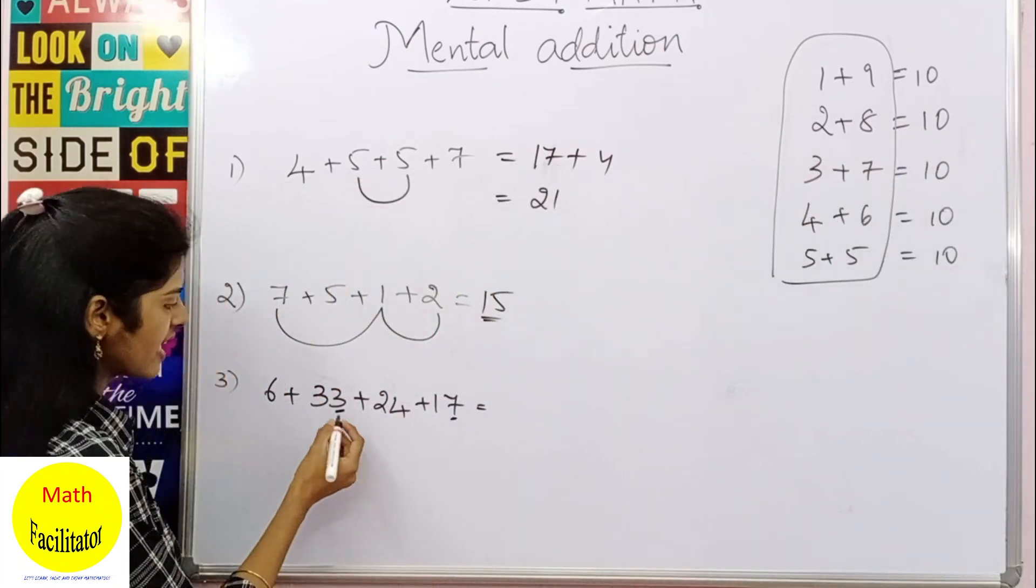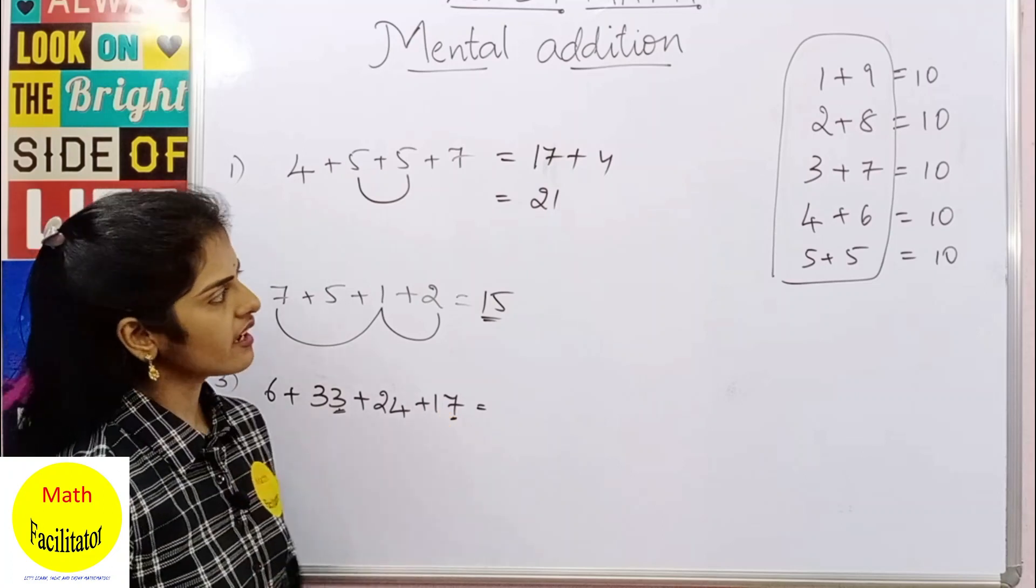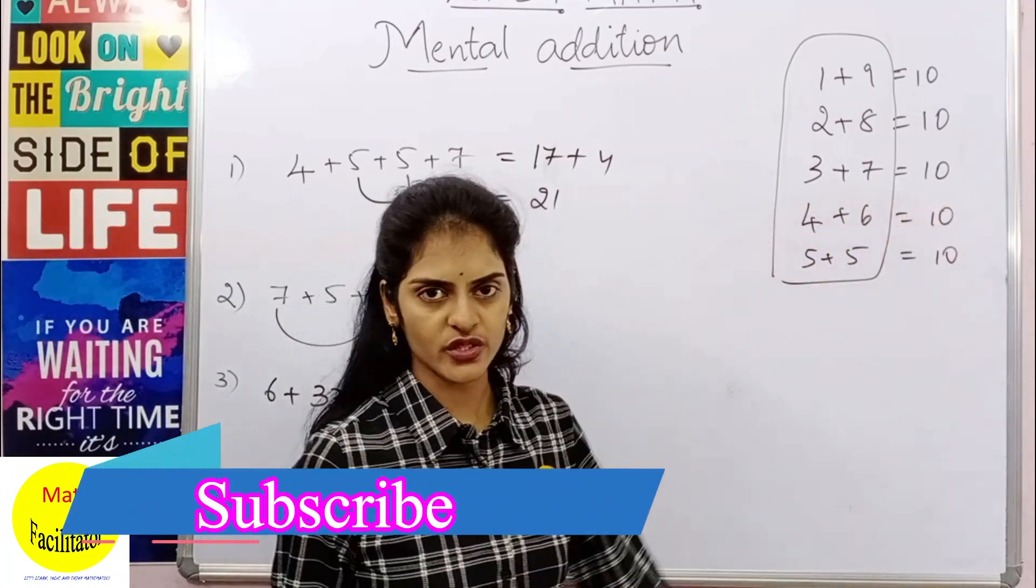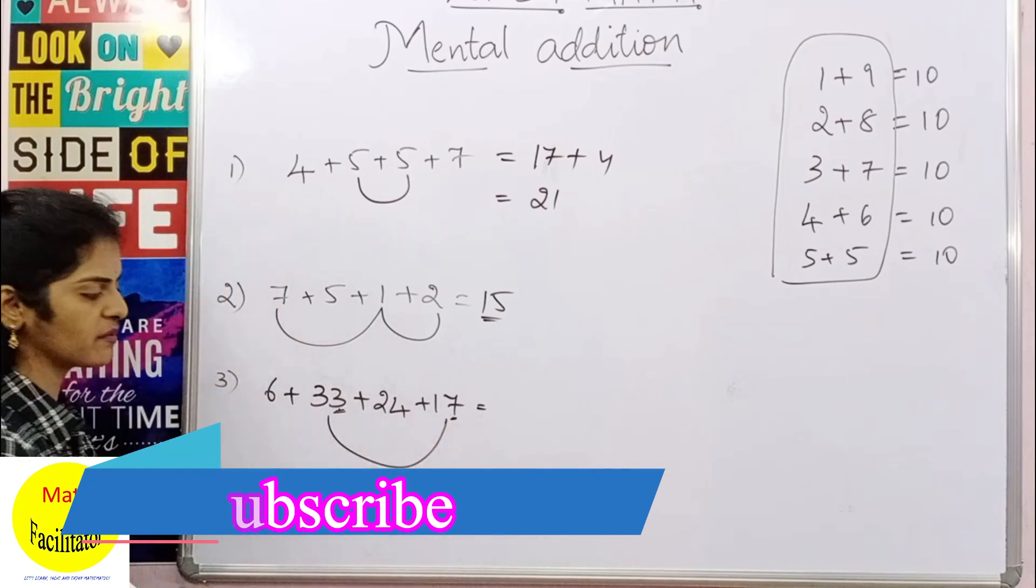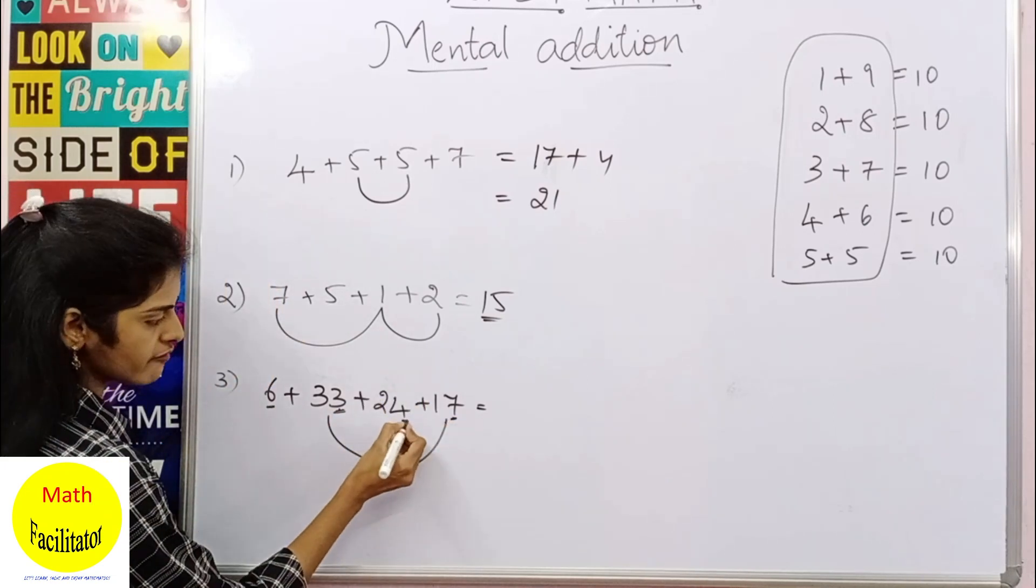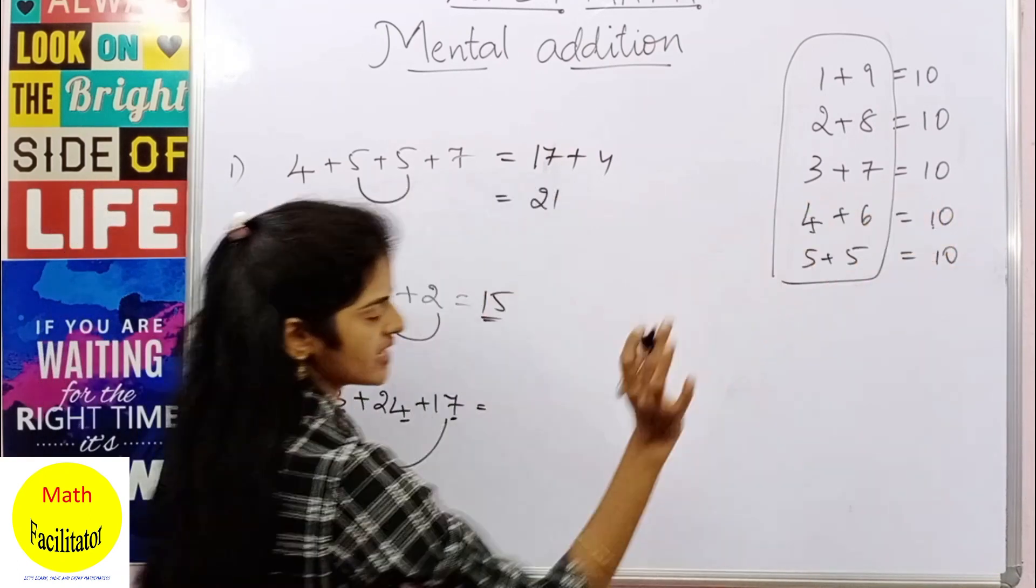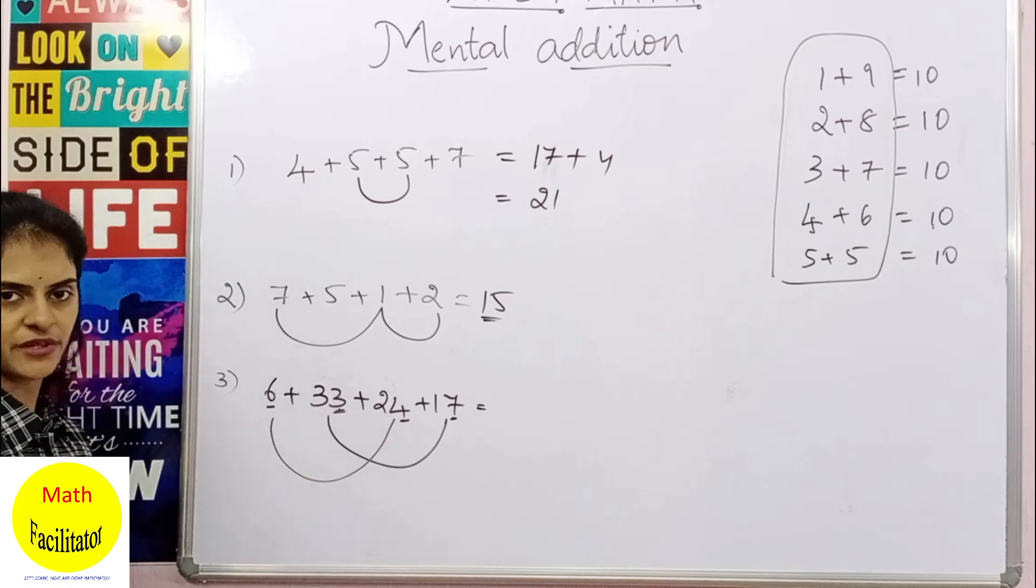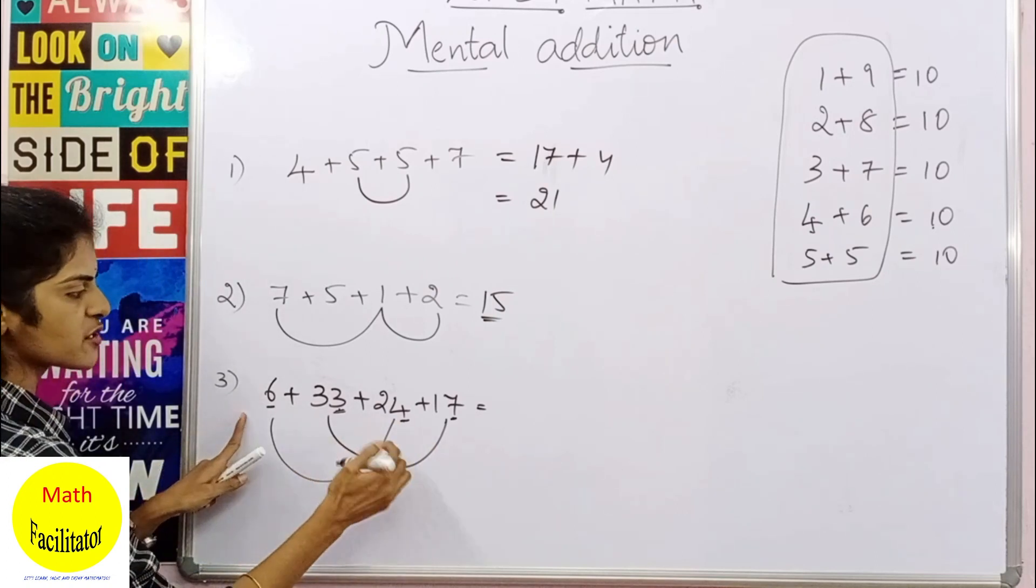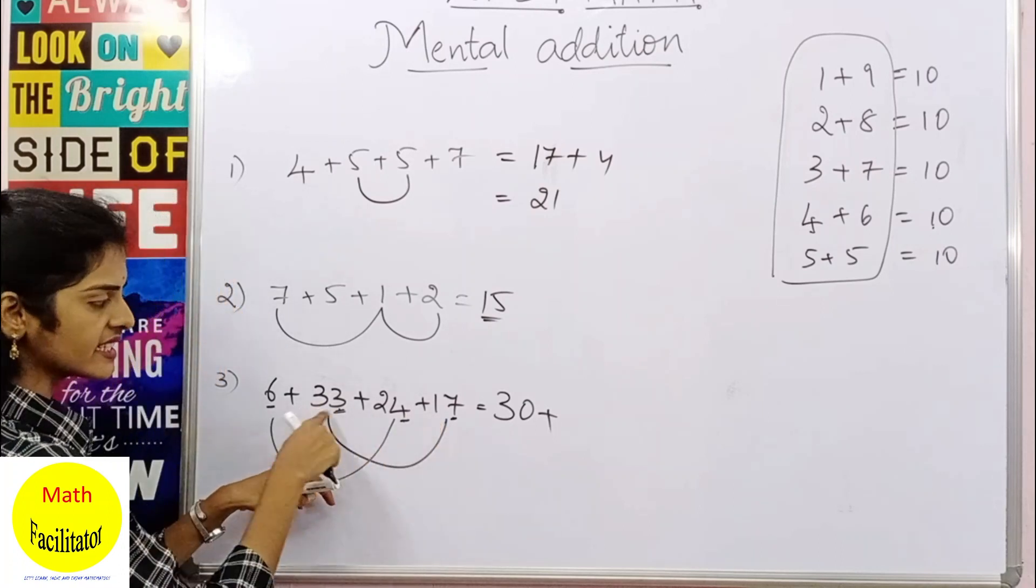As I said, we are looking at the units place. Now you have 3 and 7, 3 and 7 gives you 10. That means we'll add these two numbers firstly. And here you can see you have 6 and 4, 6 in units place and 4 in units place. It also gives you 10. That means we'll add these two combinations. So 6 plus 24 is nothing but 30.